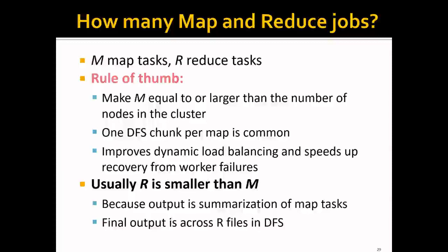Second, R — the number of reduce tasks — is usually smaller than the number of map tasks. One reason is that the output is a summarization of the map tasks, so naturally R needs to be smaller than M. The second reason is that the final output is spread across R files in the distributed system, and you want fewer files so they are more easily accessed by later MapReduce tasks.